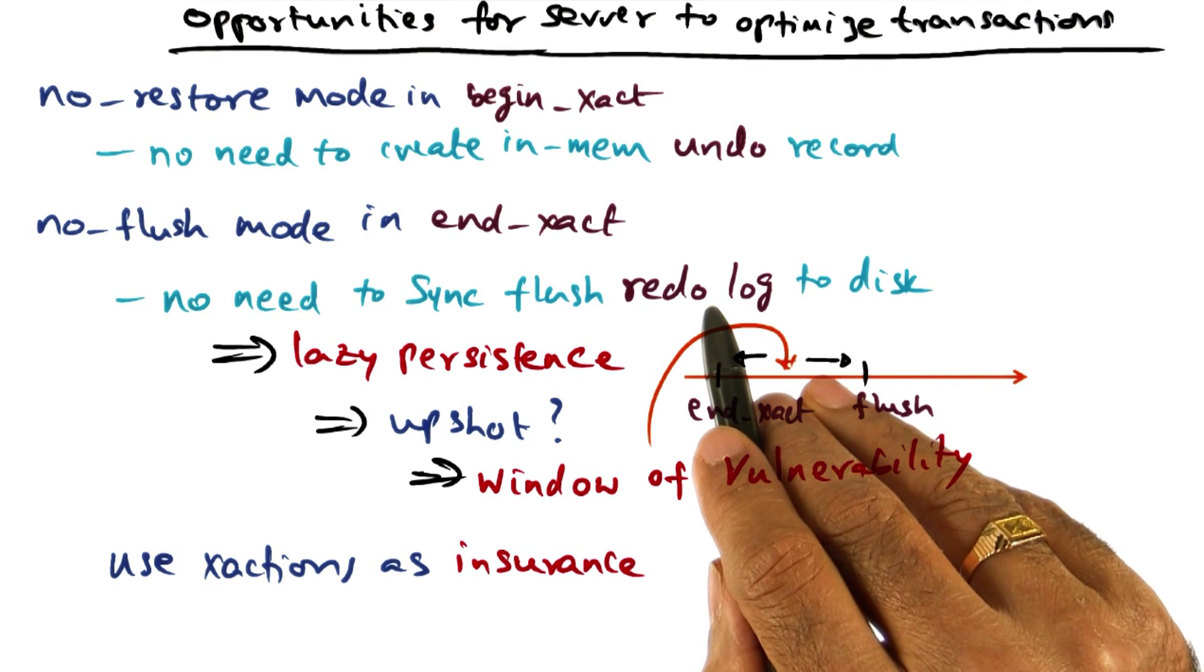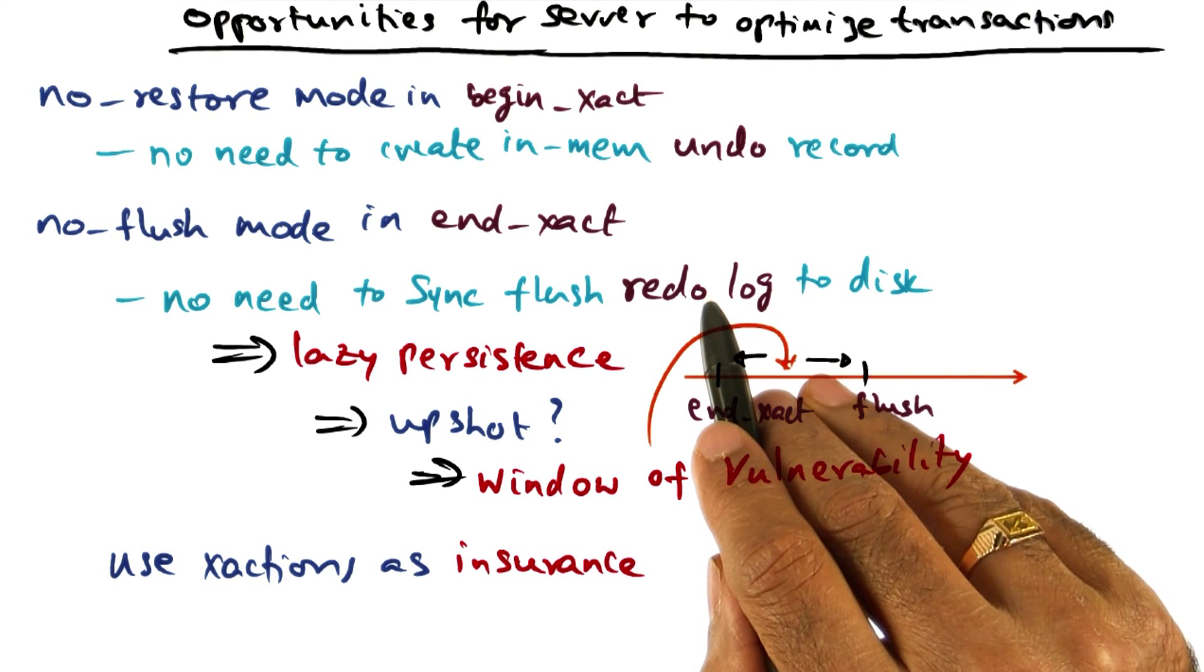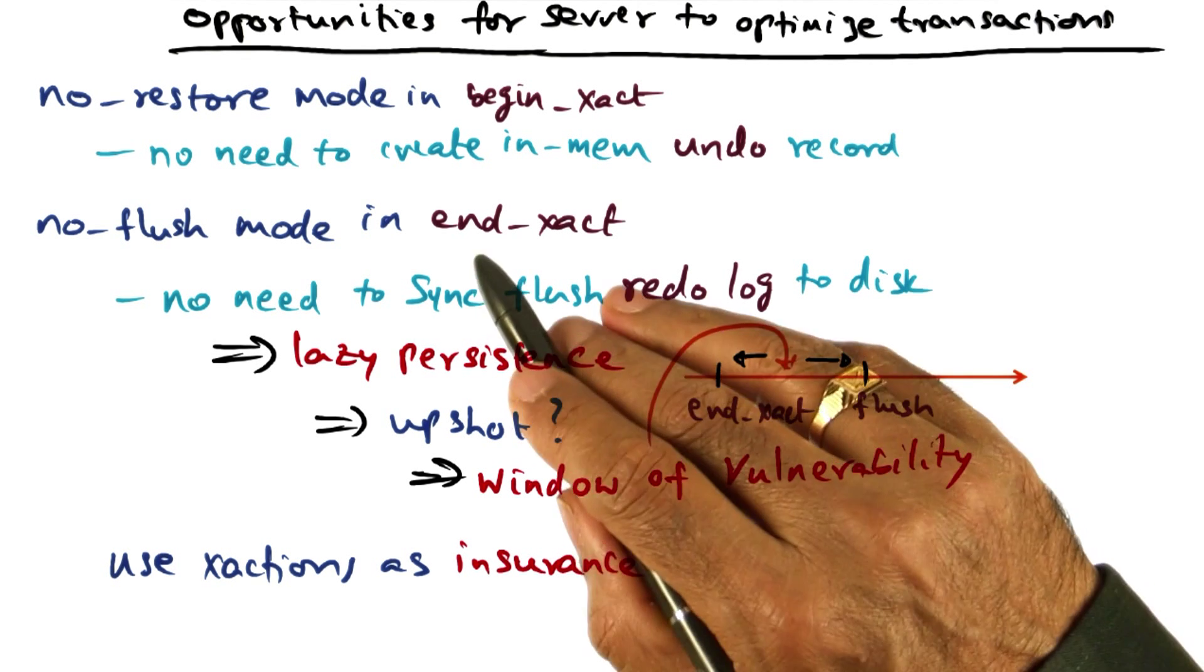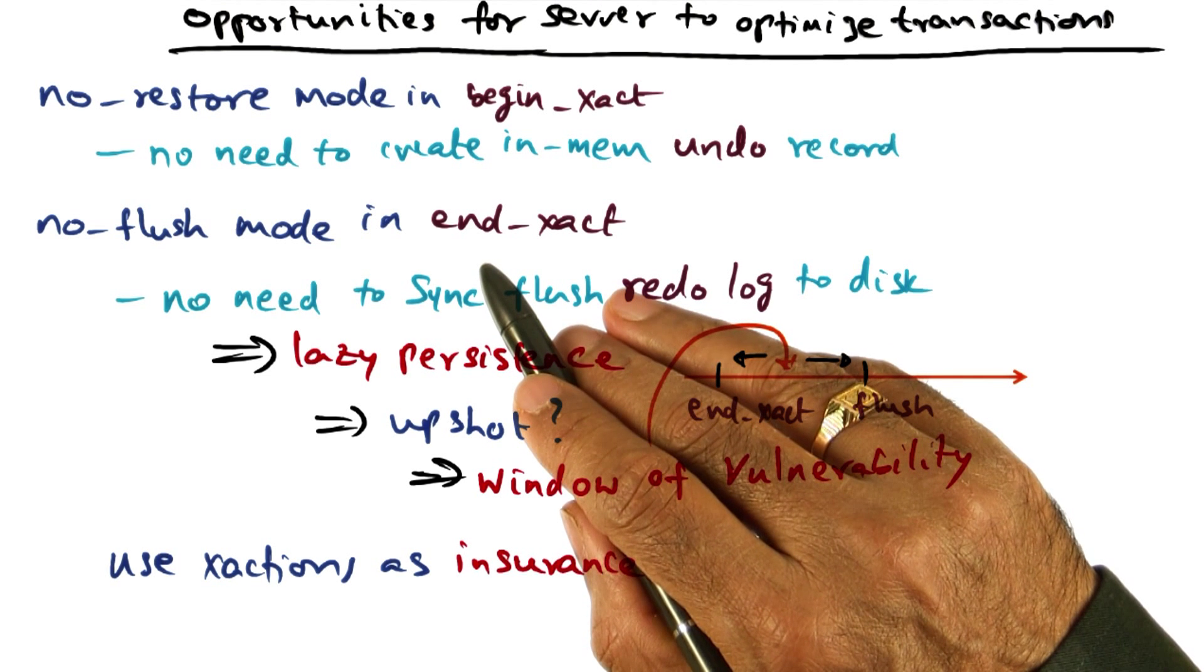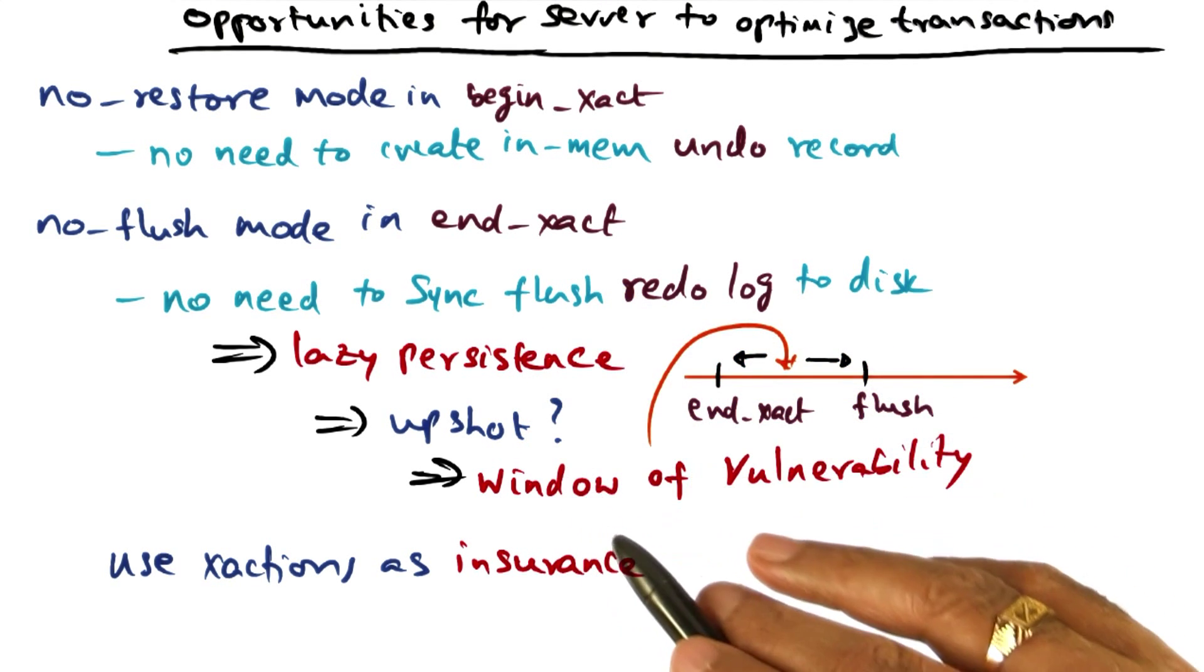We know it is going to be persisted on the disk. That is the work that RVM is going to do. But it is not doing it exactly at the point of end transaction. So the upshot is, there is a window of vulnerability.